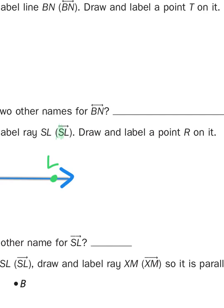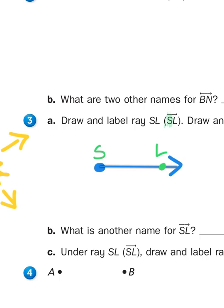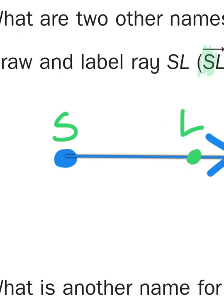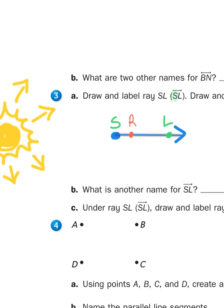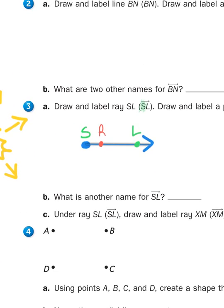Now, it says draw and label a point R on it. So a point can go anywhere along a line, segment, a line, or a ray. It's just a stopping point. So let's put R right here. So that's where I chose to put my point. So now I just label it R. So there is a ray labeled SL, and somewhere along that ray we have a point.